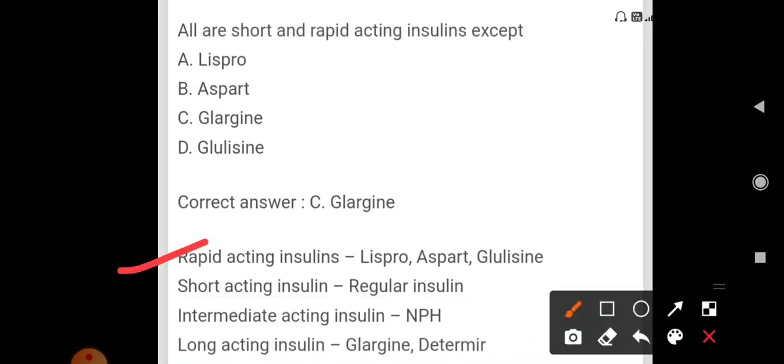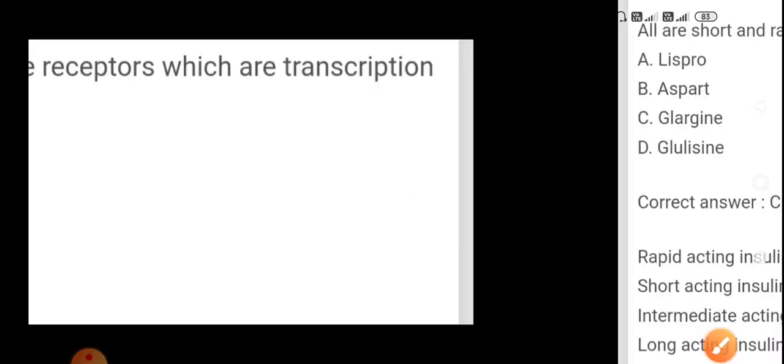Rapid acting insulins: lispro, aspart, glulisine. Short acting insulin: regular insulin. Intermediate acting insulin: NPH. Long acting insulin: glargine, detemir.